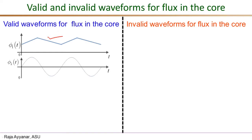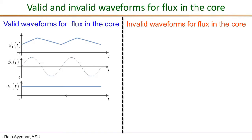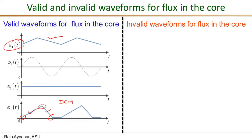A sinusoidal waveform for flux is also certainly valid — the voltage causing it would be a sinusoidal waveform in quadrature with the flux waveform. We may see this in resonant converters with quasi-sine waves. Additionally, a DC flux waveform is valid — recall that the winding voltage cannot have a DC average value, but the flux itself can be a constant DC value, which is a valid steady-state waveform.